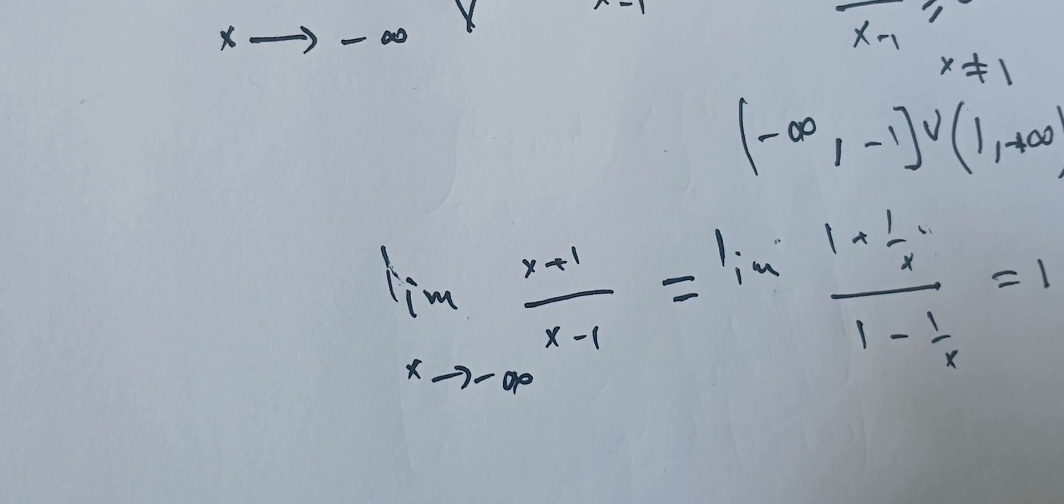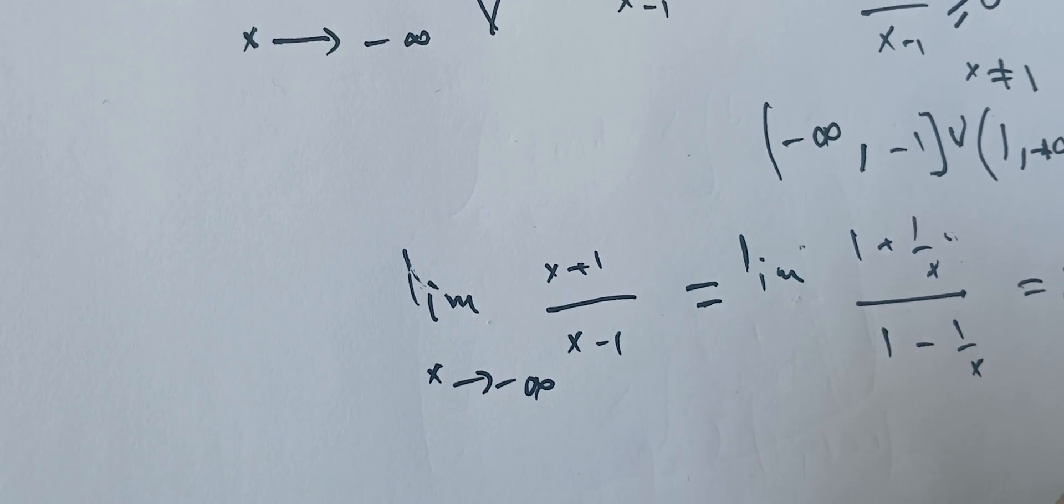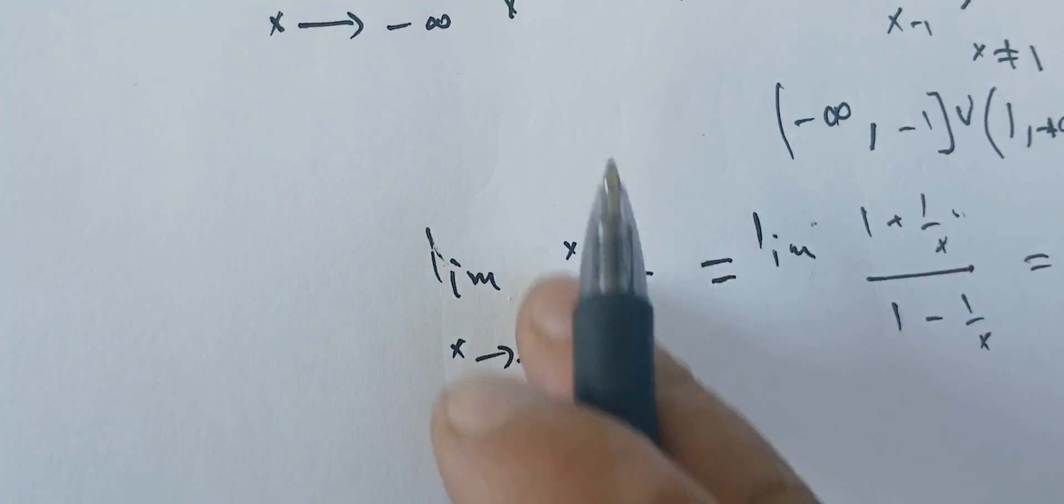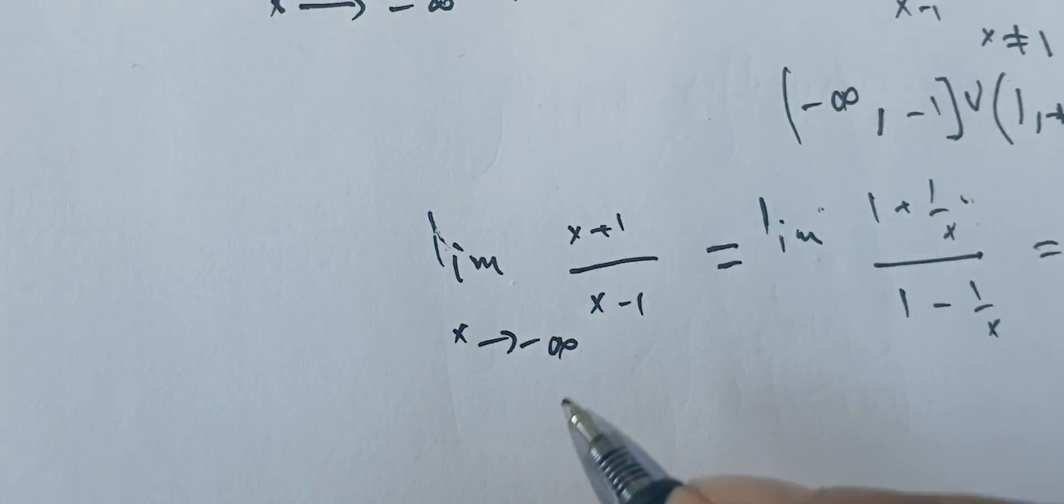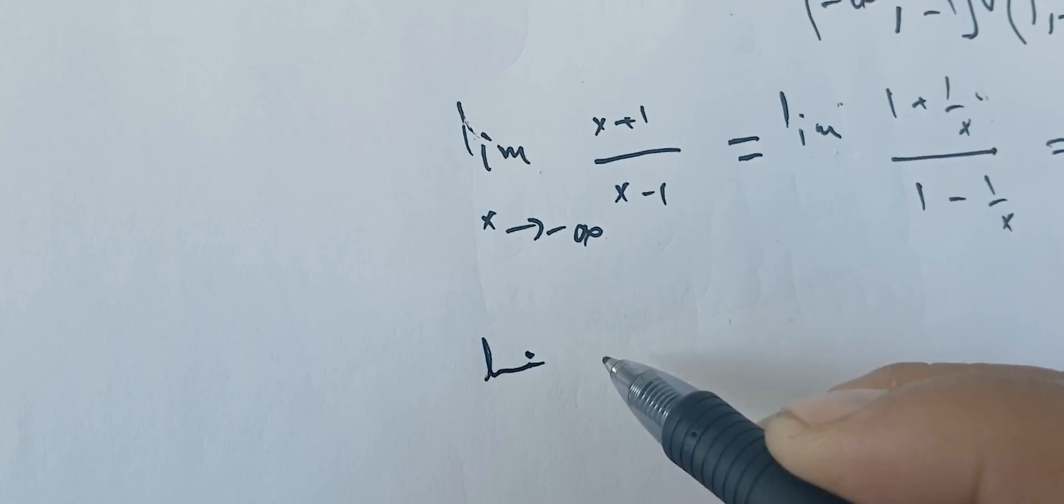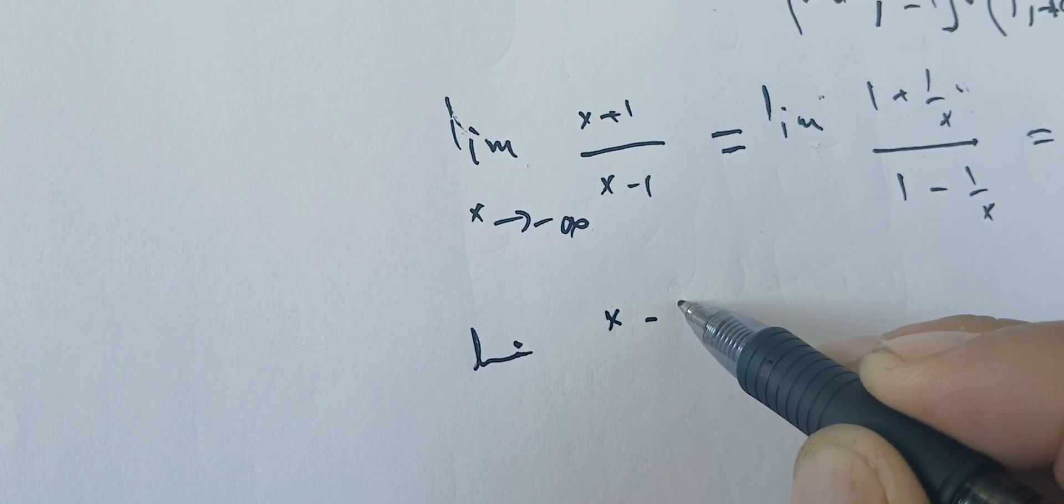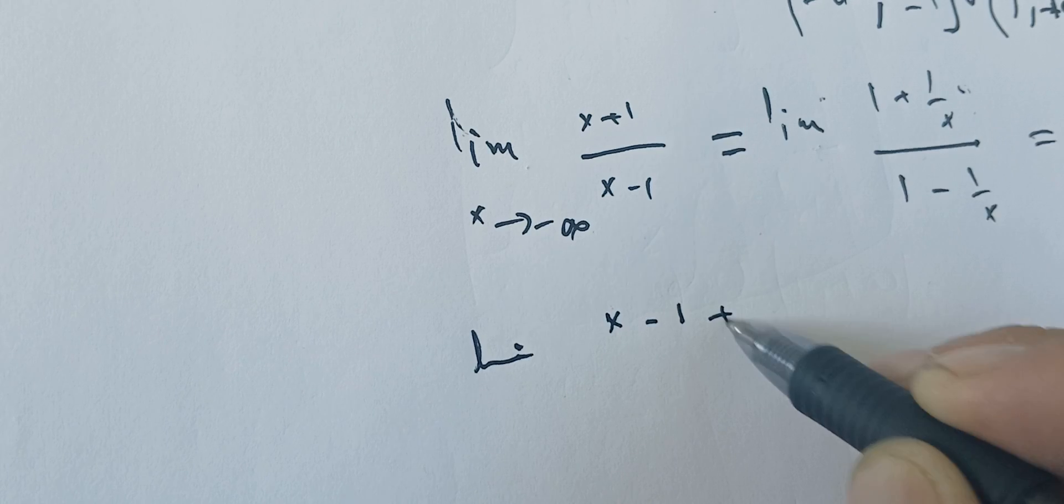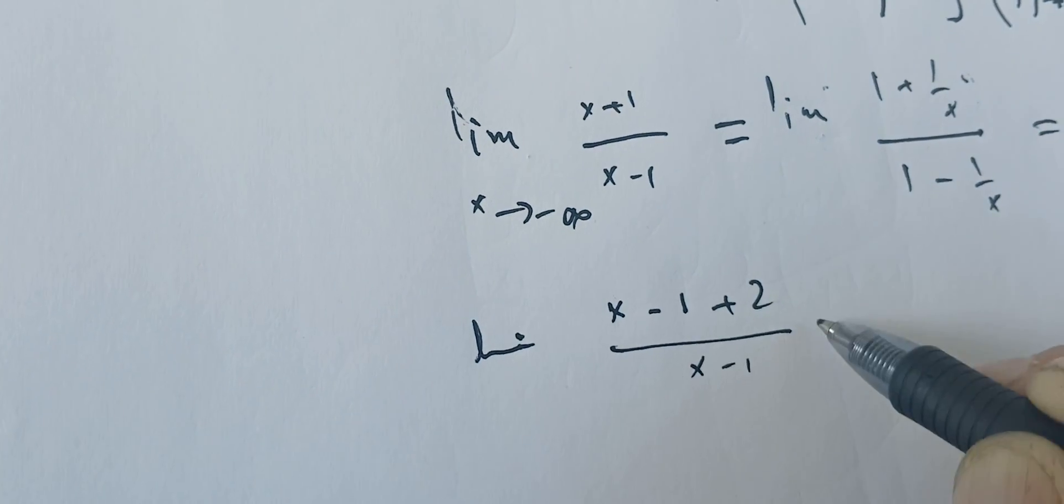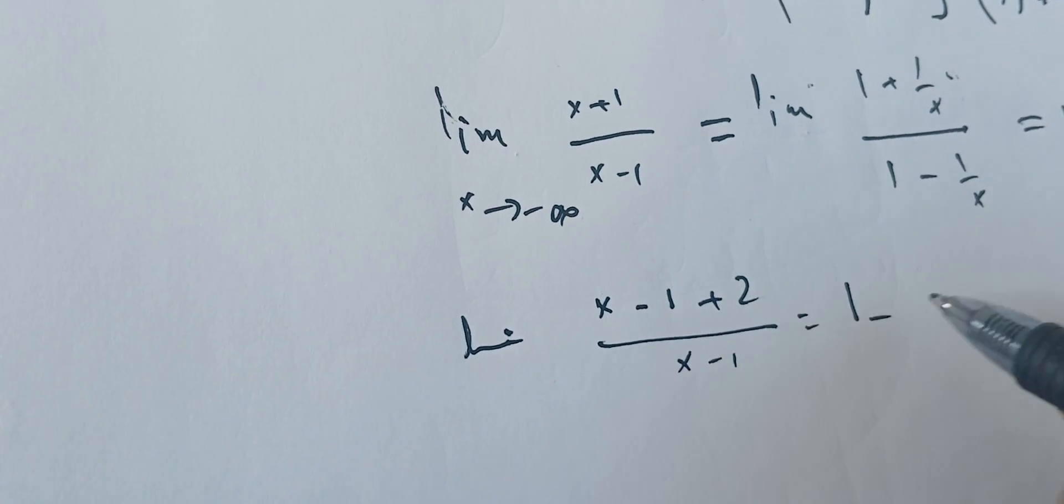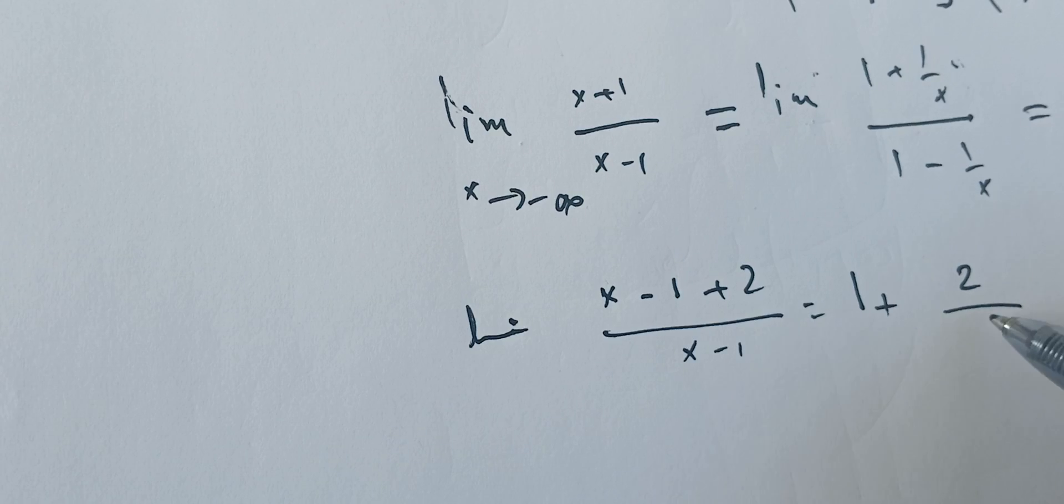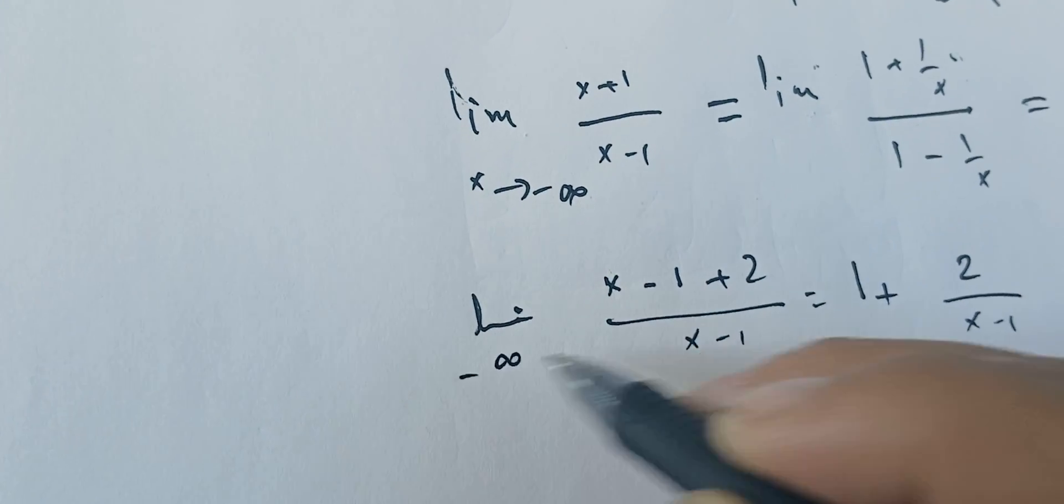Another key idea that we can use is to rewrite this. We can rewrite it as the limit of—if we add and subtract 1—so we have minus 1 plus 2 over x minus 1, which gives us 1 plus 2 over x minus 1.